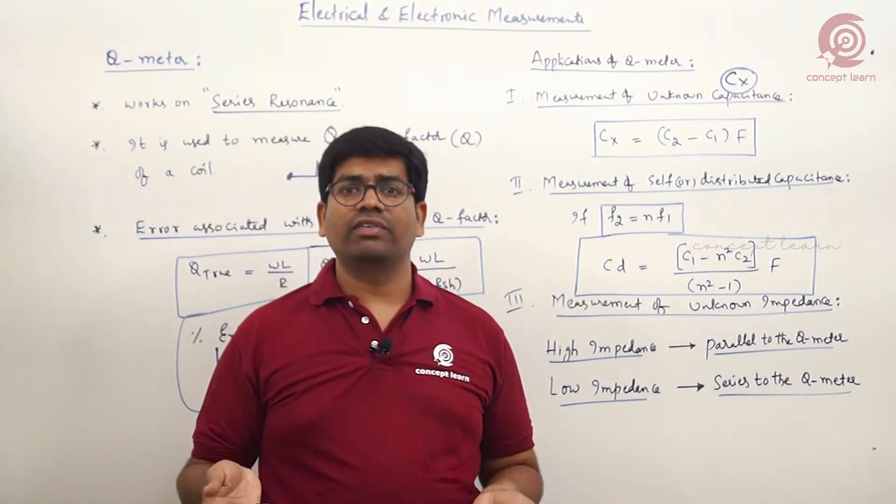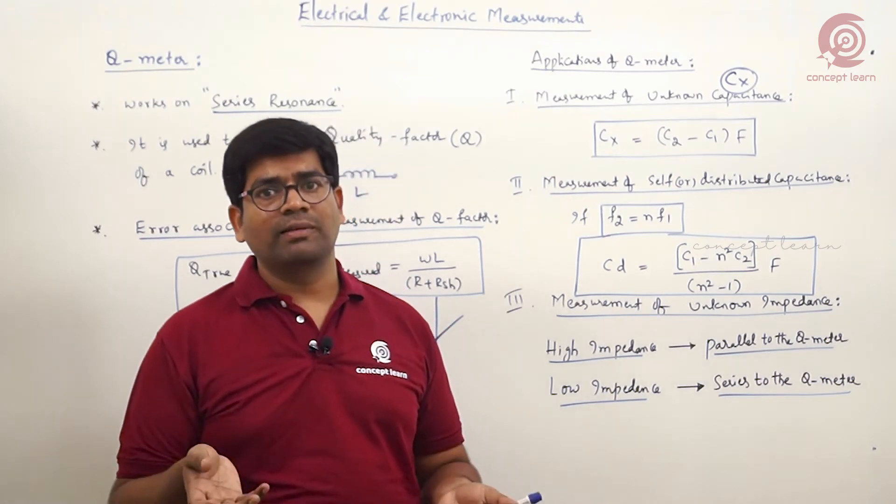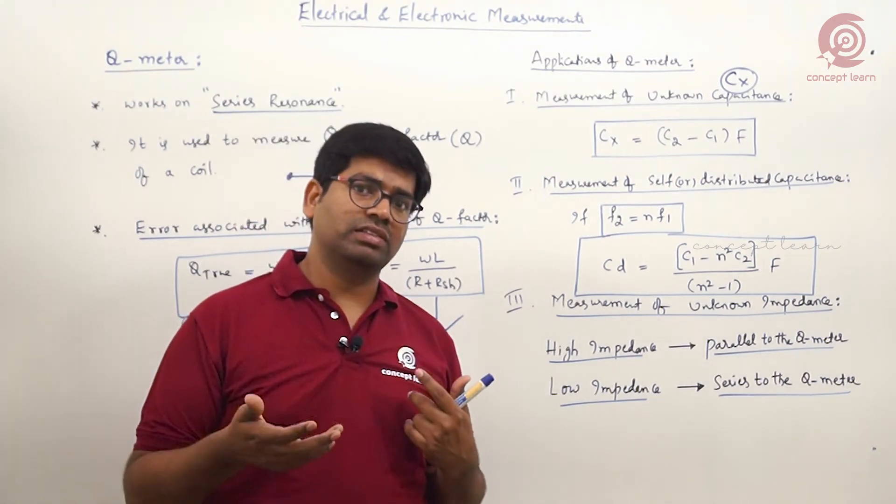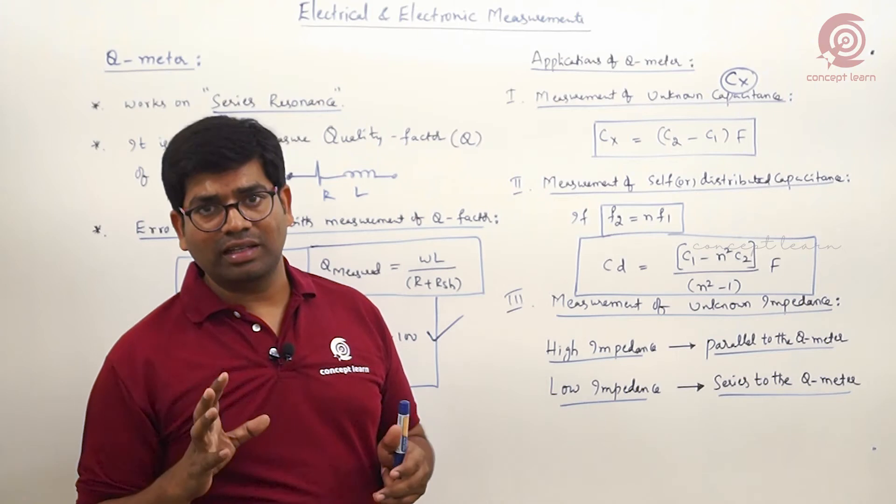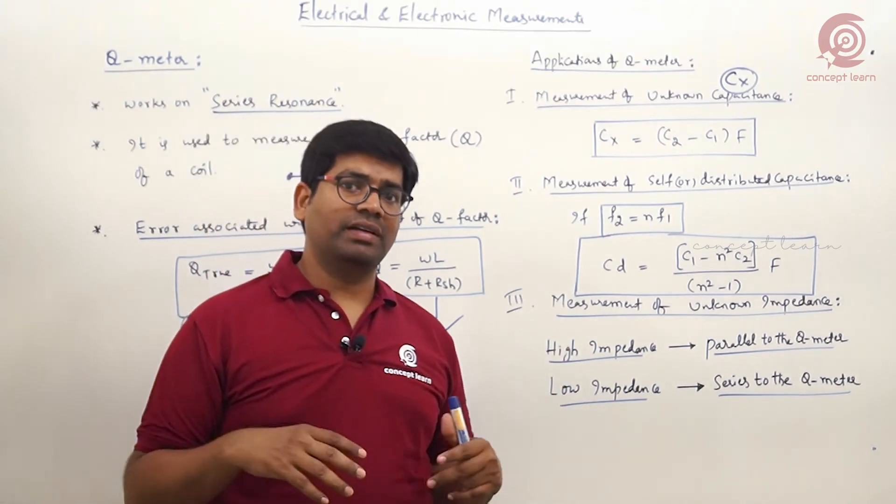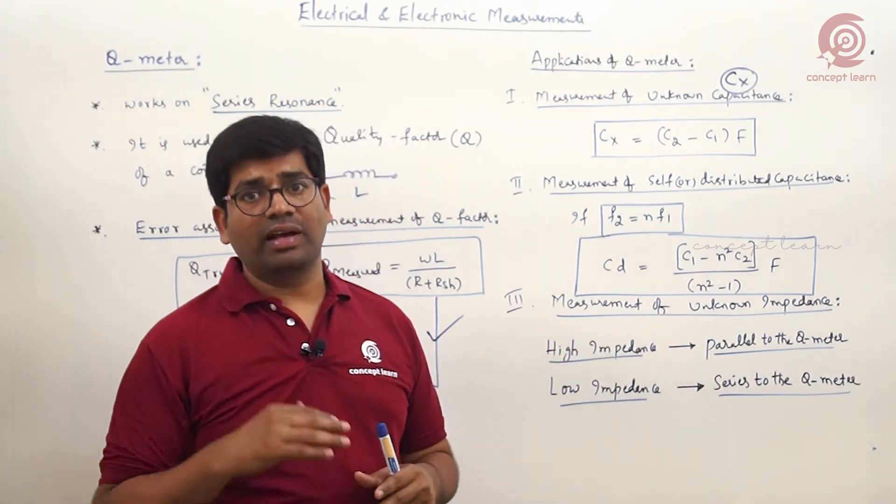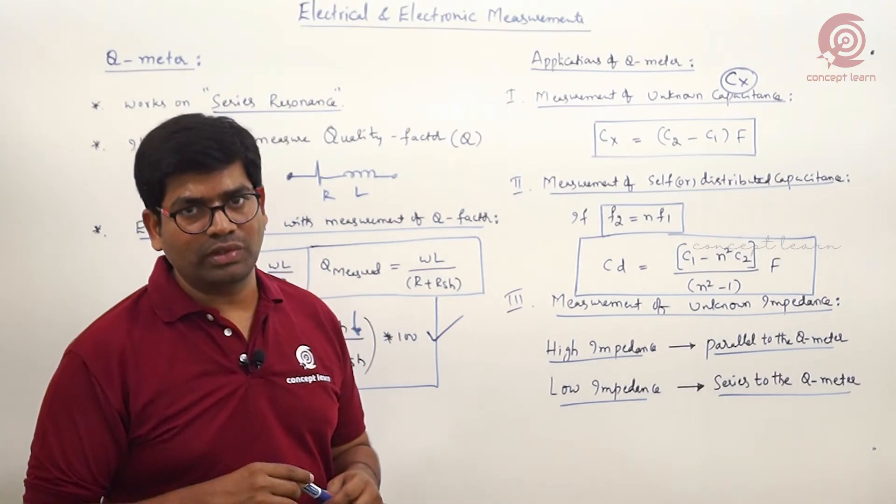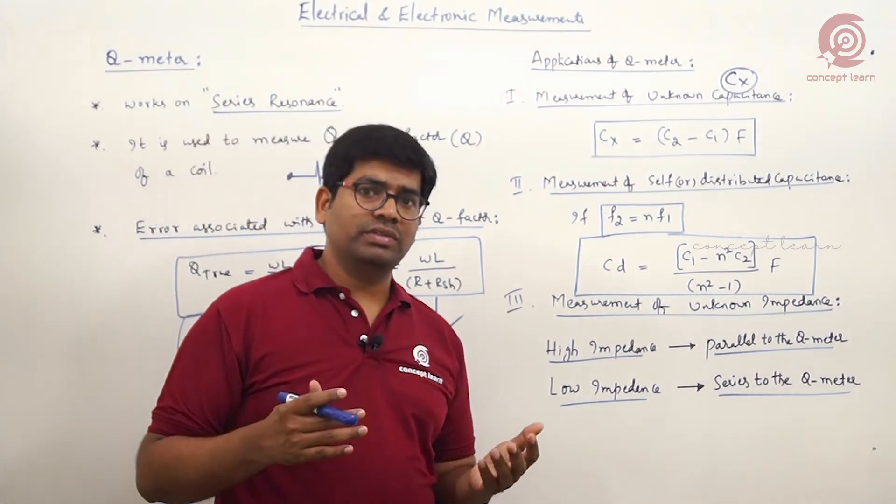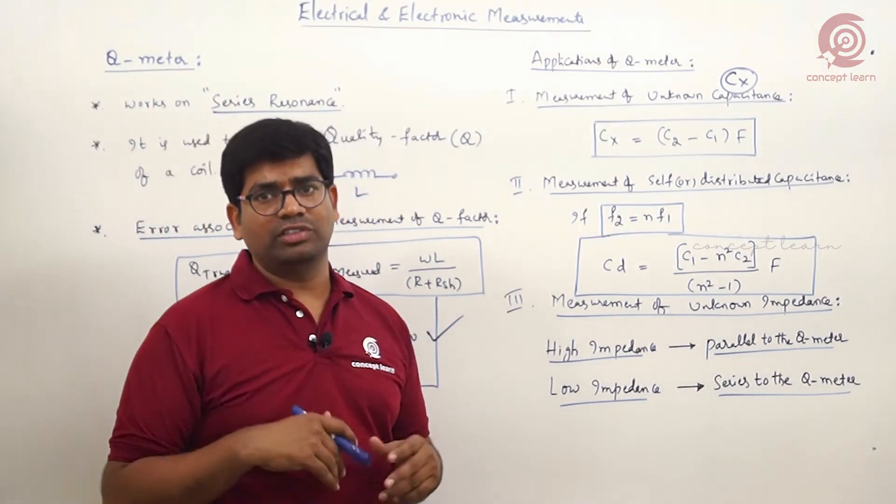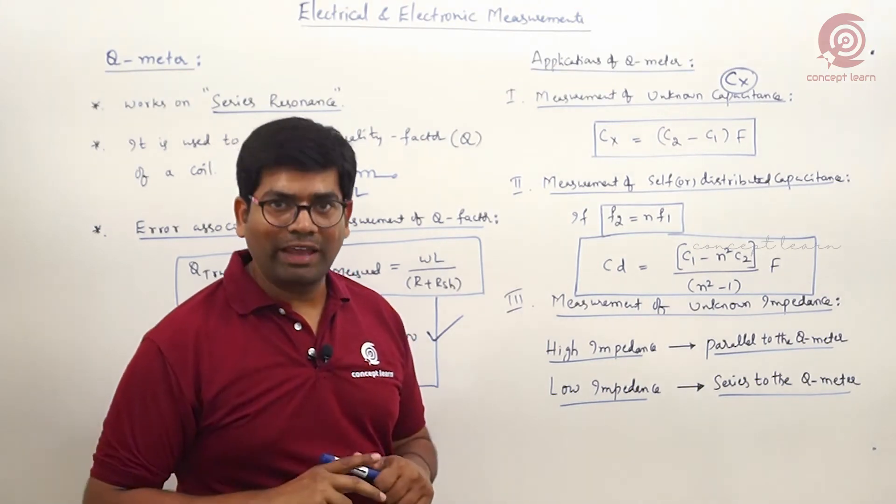Even coil consists of resistance as well as capacitance. All these three parameters are distributed in nature, possible at high frequencies only. Suppose coil is having some distributed capacitance, but it is possible only at high frequencies.